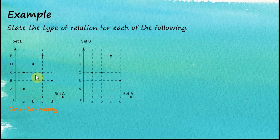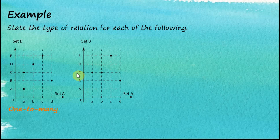What about this one? We can see that we have two objects — A mapped to C and B also mapped to C. Two objects mapped to one image. Therefore, this is many-to-one.